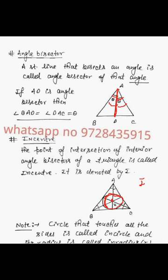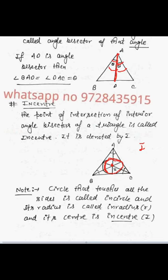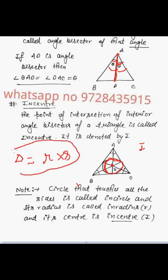The incenter is the center of a circle which touches all three sides from the inside; this circle's center is called the incenter. For finding the area of the triangle, the formula is: Area = r × s, where r is the in-radius (the radius of the inscribed circle) and s is the semi-perimeter of the triangle.